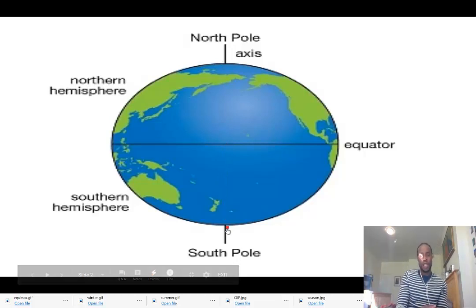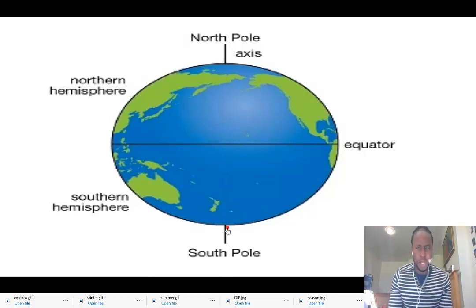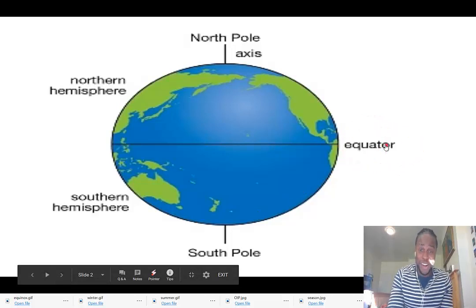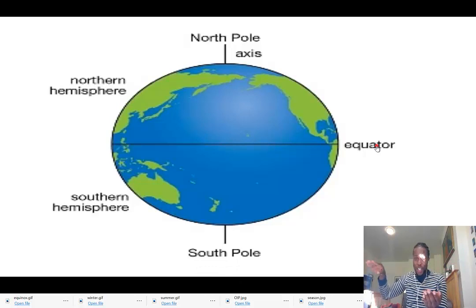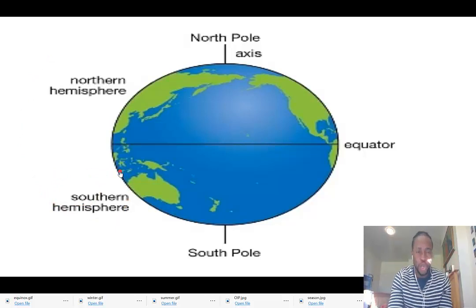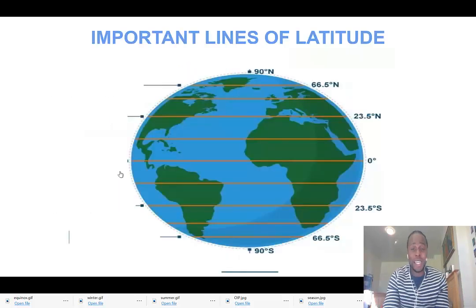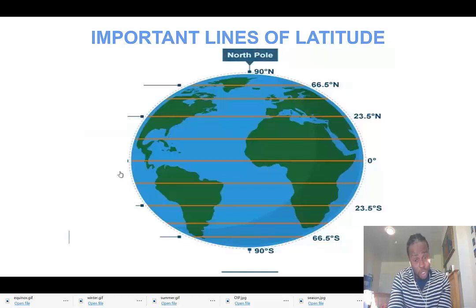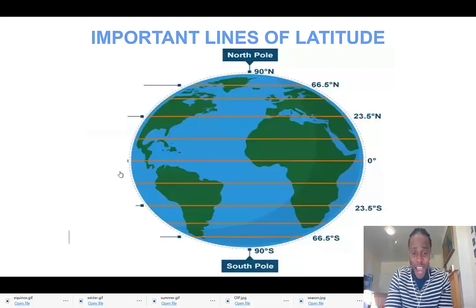Another important line you need to know is the popular equator. The equator is the horizontal line that cuts the Earth horizontally and divides it into the Northern Hemisphere and Southern Hemisphere. So we've just learned about the North Pole and the South Pole, the Earth's axis connecting both poles, and the equator dividing the two hemispheres.